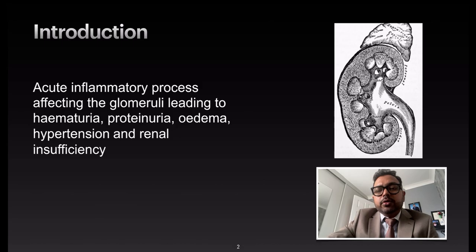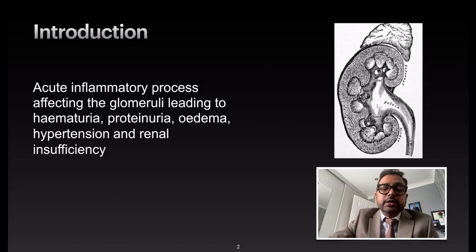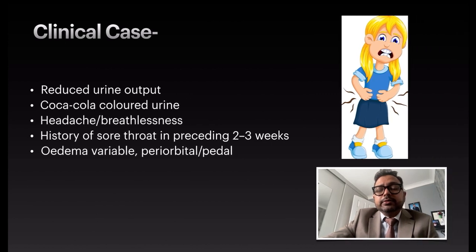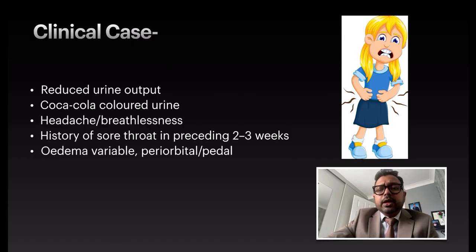Acute glomerulonephritis is an acute inflammatory process affecting the glomeruli, leading to hematuria, proteinuria, edema, hypertension, and renal insufficiency. The clinical case is associated with reduced urine output, hematuria or coca-cola colored urine, headache, breathlessness, and a history of sore throat preceding by two to three weeks. Edema is variable, starting from periorbital or pedal edema.